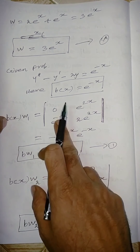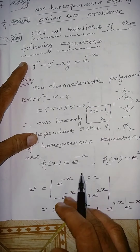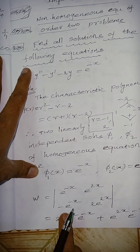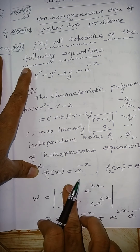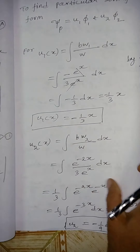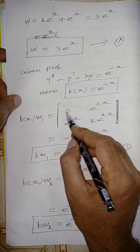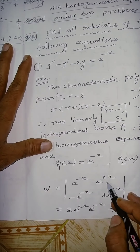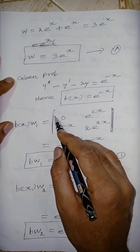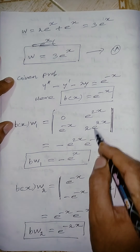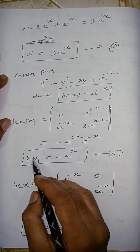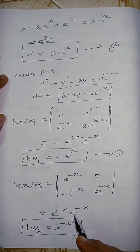For bW₁, the first column is replaced by [0; e^(−x)], and the second column remains [e^(2x); 2e^(2x)]. Computing the determinant: 0·2e^(2x) − e^(−x)·e^(2x) = −e^x. So bW₁ = −e^x.